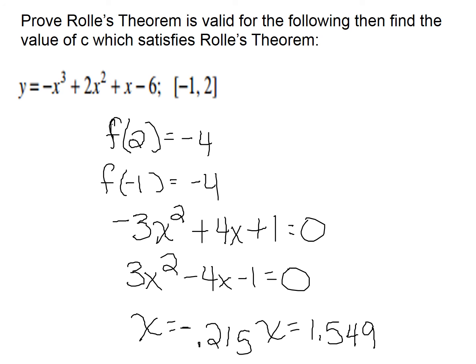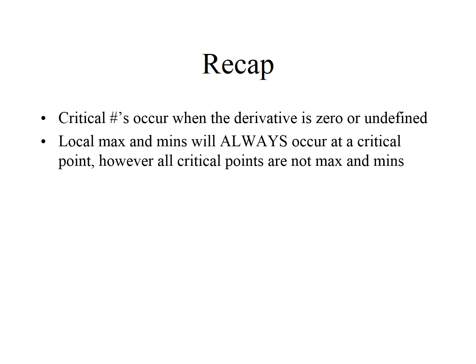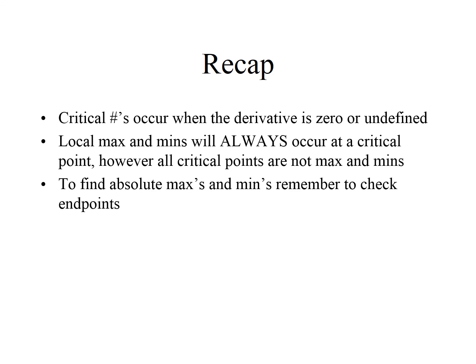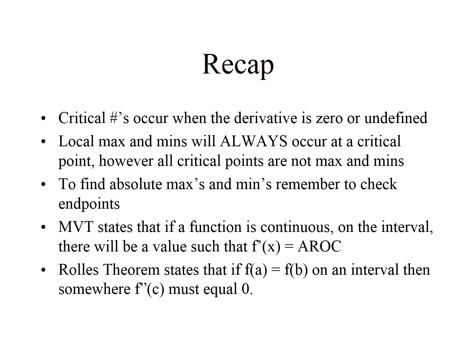To summarize: critical numbers occur when the derivative is 0 or undefined. Local maxima and minima always occur at critical points, but not all critical points are maxima or minima. To find absolute max and min, remember to check your endpoints. The Mean Value Theorem states that if a function is continuous on an interval, there is a value where the derivative equals the average rate of change. Rolle's Theorem requires continuity, differentiability, and f(a) equals f(b), guaranteeing some point where the derivative is 0.